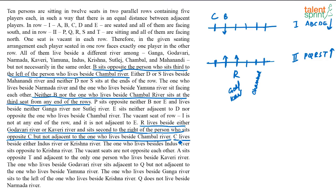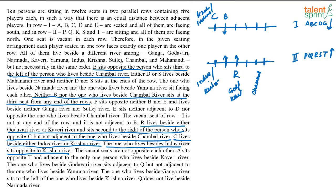C lives beside either Indus or Krishna River. The one who lives beside Indus River sits opposite to the one beside Krishna River. So if C is Indus or Krishna, the person directly opposite C is the other one. The vacant seats are not opposite to each other.